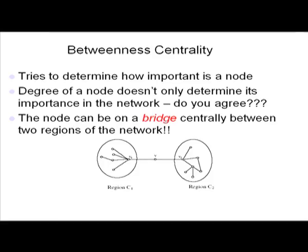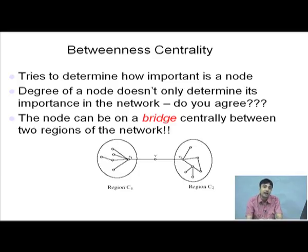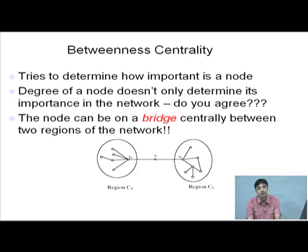In the slides, you see there are these two regions C1 and C2, and these two regions are only connected by the vertex V sitting in the middle of the two regions. This node is kind of bridging between the two different regions of the network, and definitely these nodes are very, very important.